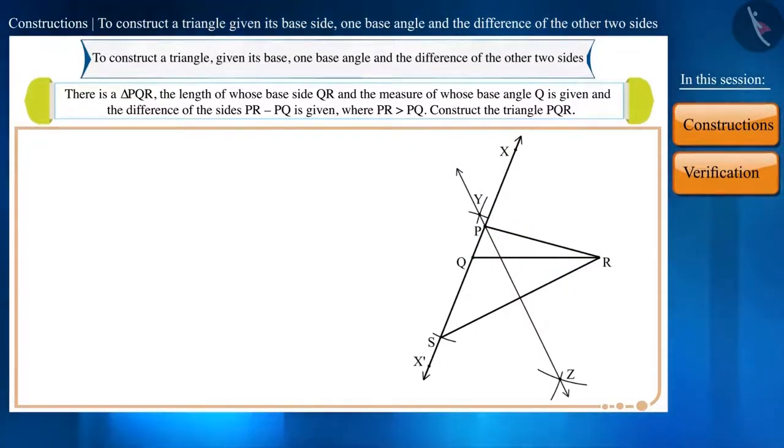Now let's check our construction. For this, we will have to show that the difference of the two sides PR minus PQ will be equal to the given difference SQ. We see that point P is equidistant from points S and R because this point P is located on the bisector of the line segment SR. Therefore, PS will be equal to PR. Let's call this equation as equation 1.